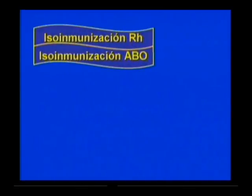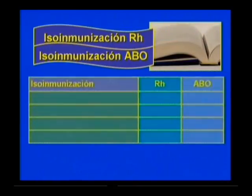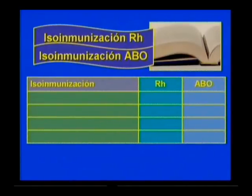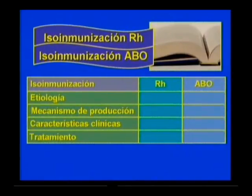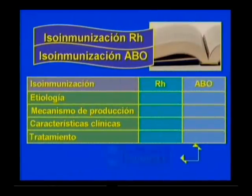Por la importancia que revisten la isoinmunización RH y ABO, se sugiere realizar un cuadro sinóptico comparativo revisando la bibliografía básica, donde se incluyan los aspectos que diferencian a ambas patologías: etiología, mecanismo de producción, características clínicas más relevantes, el tratamiento aplicado y las características de la sangre empleada en la exanguineotransfusión. También pueden revisarse los materiales complementarios sobre estas patologías que aparecen en el CD de la asignatura Pediatría 1.